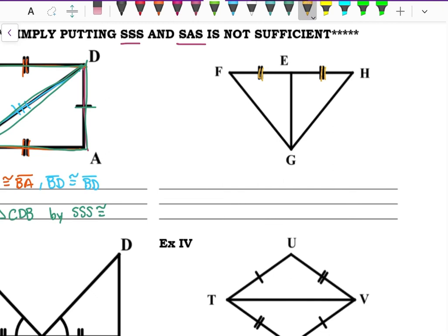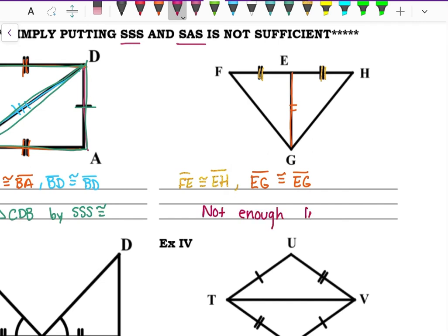Example two: FG is congruent to EH, and EG is congruent to itself by the Reflexive Property. But I don't have any angle or a third side, so this is not enough information to say those two triangles are congruent.